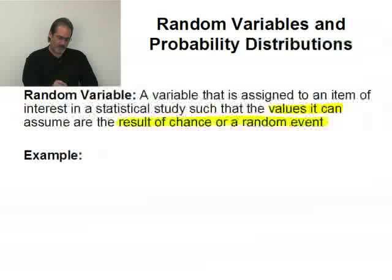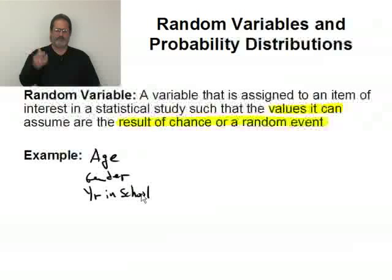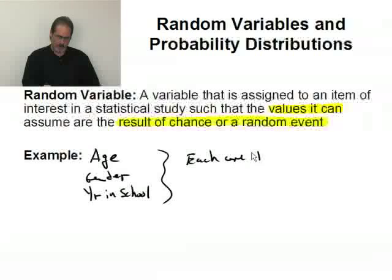Now, a couple quick examples. Suppose we do a study and we ask people basic background information. We ask them their age. We may get their gender. We may ask them what year are you in school. If the people we selected were the result of a random sample, then each of these are random variables.